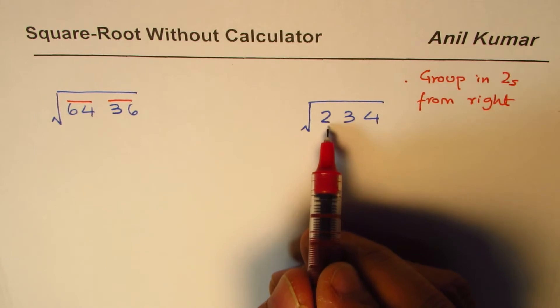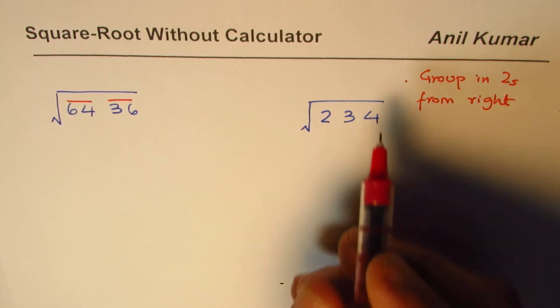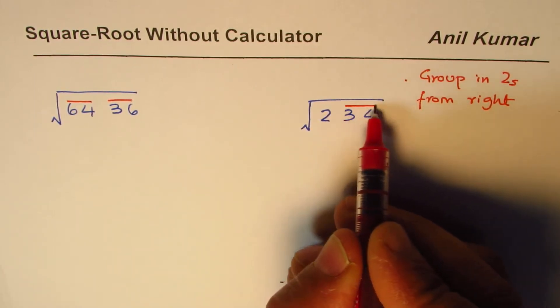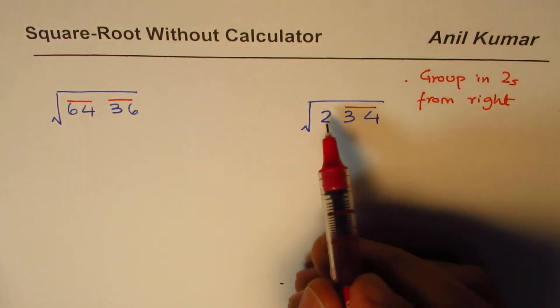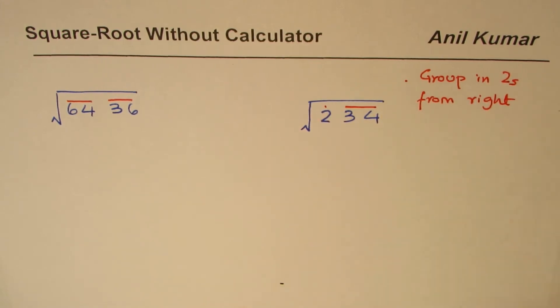When you have odd number of digits, group from right - 34 is a set of two numbers, group it, and then you're left with one. That's how we get two different types of questions to work with.